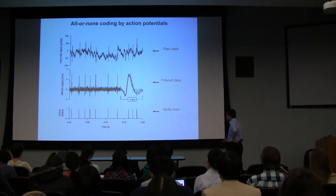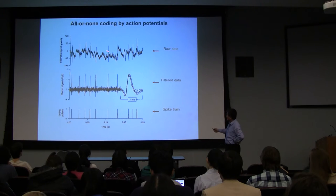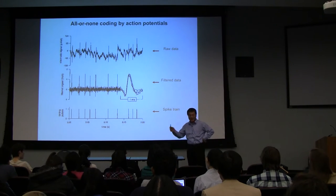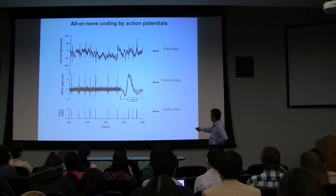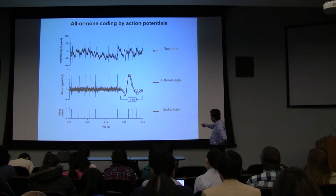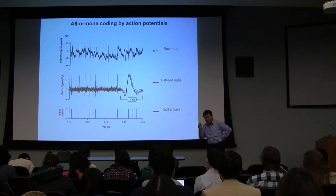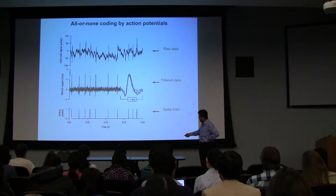If you look at how people actually get action potential data, one would record extracellularly, and you have spikes on top of slow waveforms — the average potential fluctuations in the brain. To extract action potentials, first you apply a high-pass filter to get rid of the slow-changing waveform. Then you do template matching — expanding each action potential and matching it to a pattern. Once you extract one spike, you can replace the whole waveform and replot it as a single dot or line, where only the time of occurrence matters because it's all-or-none.